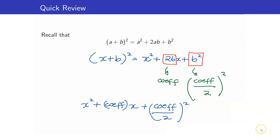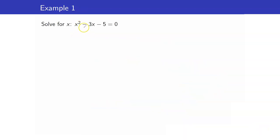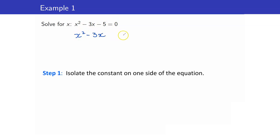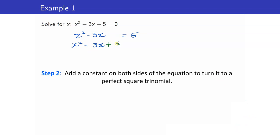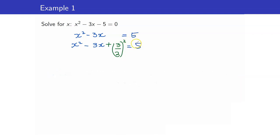Let us see how this works in our examples. Suppose I have x squared minus 3x minus 5 equals 0. The first thing you have to do is isolate your constant. Put it on the right-hand side. Then, to make this a perfect square, add the coefficient divided by 2 and then squared — which is 3 over 2 squared. Since you added 3 over 2 squared on the left, you also have to add the same thing on the right-hand side. This is the addition property of equality — whatever you do on one side, you do on the other.